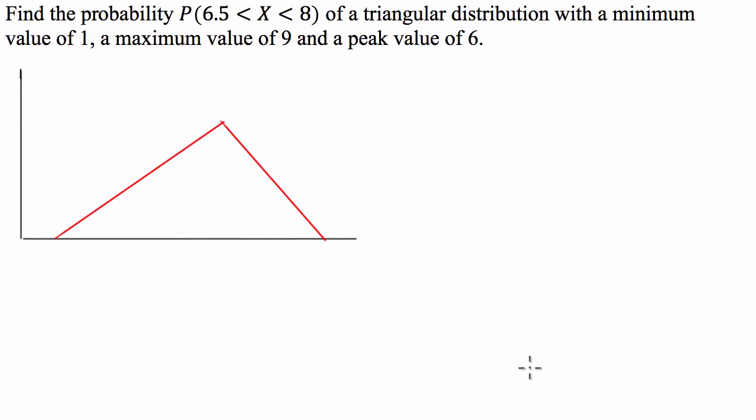We've got a triangular distribution with a minimum value of 1, a maximum value of 9, and a peak value of 6, and we're asked to find the probability of the random variable x falling between this interval here.